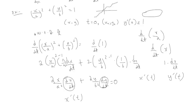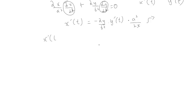x'(t) stays on one side. Moving the other term gives us: minus 2y/b² times y'(t) on the other side, multiplied by the reciprocal of the x term. After simplification — the 2's cancel — we get: x'(t) = −y·a² / (x·b²) · y'(t).